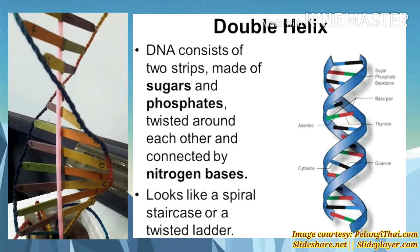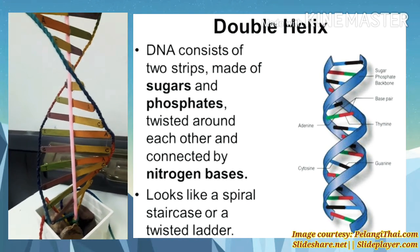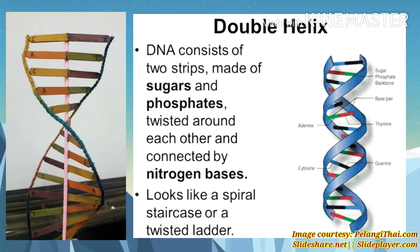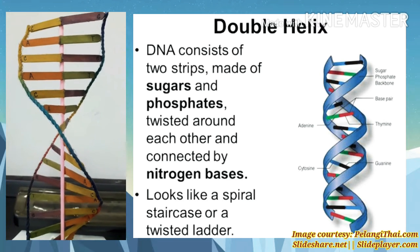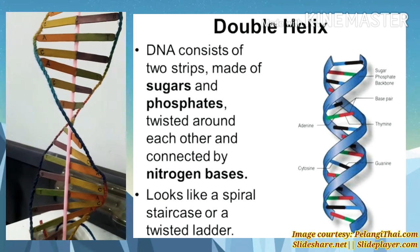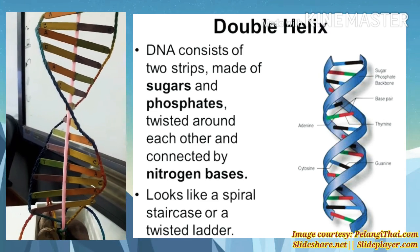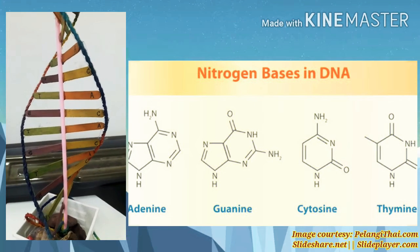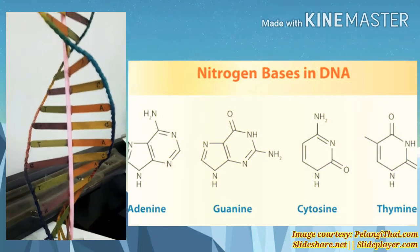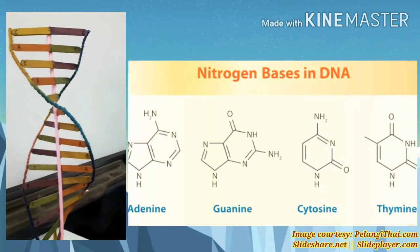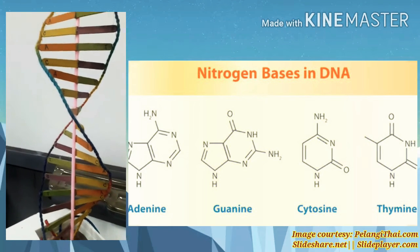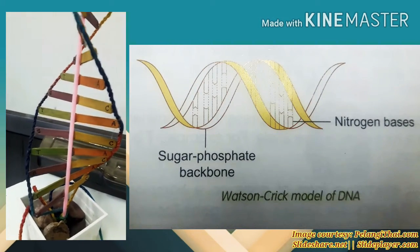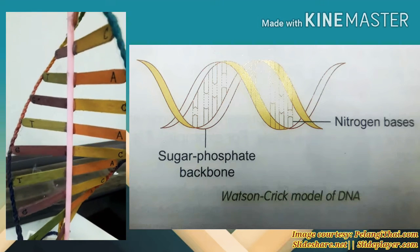Based on the picture given, according to the Watson-Crick model of DNA, the structure of DNA resembles a twisted ladder known as a double helix formation. Each side of the ladder is made up of sugar-phosphate molecules. The rungs of the ladder are made up of paired molecules called nitrogenous bases. There are four different bases in DNA: adenine, guanine, cytosine, and thymine.